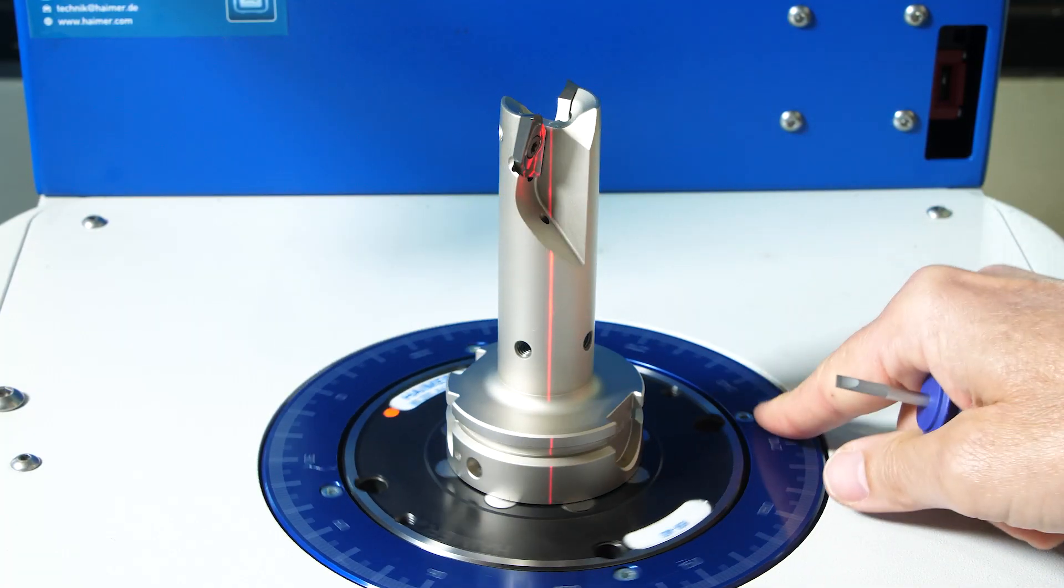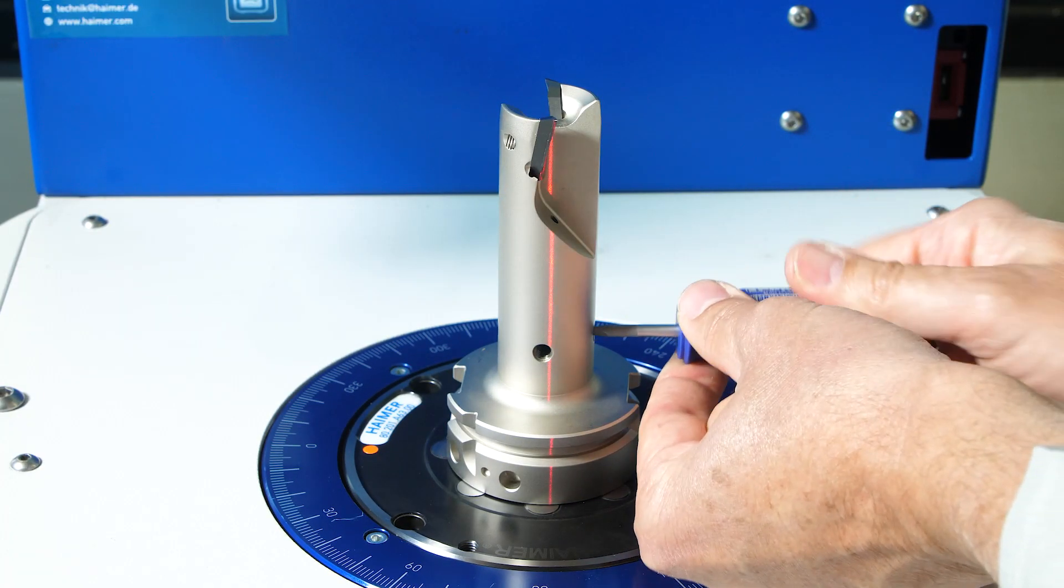To prevent the loosening of the balancing screw, it should be tightened to the bottom of the thread.